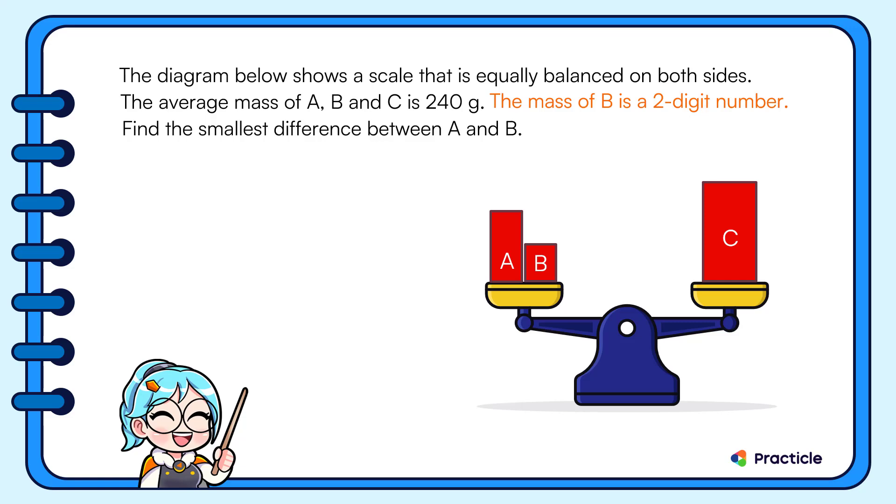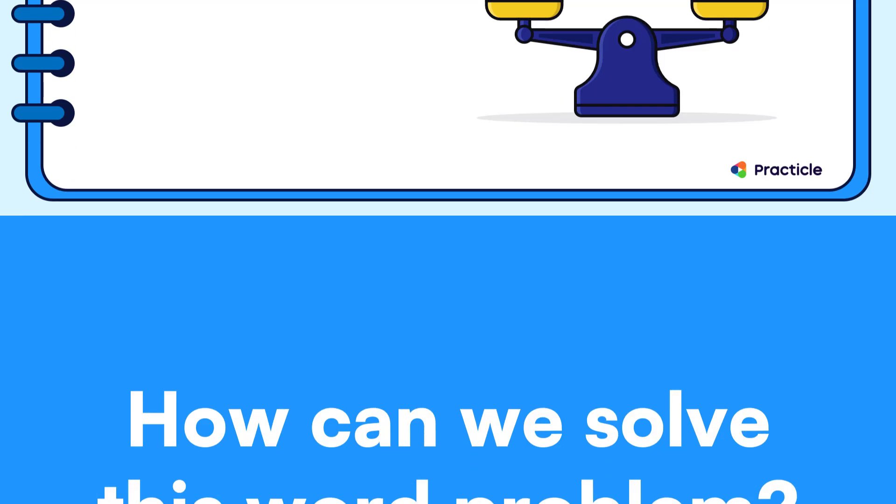The mass of B is a two-digit number. This means that B can have a mass of anything from 10 grams all the way to 99 grams. We don't really know how heavy it is now. Then here comes the question that we need to solve. Find the smallest difference between A and B. How would you go about solving this?